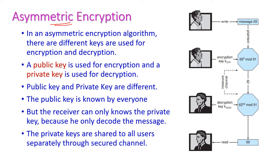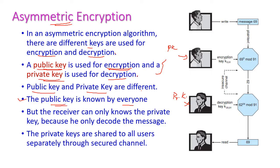In asymmetric encryption, different keys are used for both encryption and decryption. The public key is used for encryption and the private key is used for decryption. The sender uses the public key to encrypt the text, and the receiver uses their own private key to decrypt it. The public key is known by everyone connected in the network, but the private key is secret — each user has their own private key. Both public and private keys are distributed to all users through a secured channel.